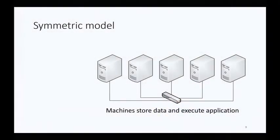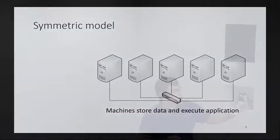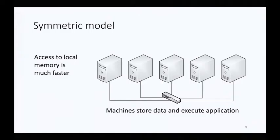Another goal is to enable access to data in local memory. We want to co-locate data and computation to enable applications to access local memory as much as possible, because local memory access is about 20 times faster than accessing data over RDMA. FARM has a symmetric model where machines both store the data and execute the application. This differs from traditional setups where one set of machines stores the data in a database or caching layer, and a distinct set executes the application logic.